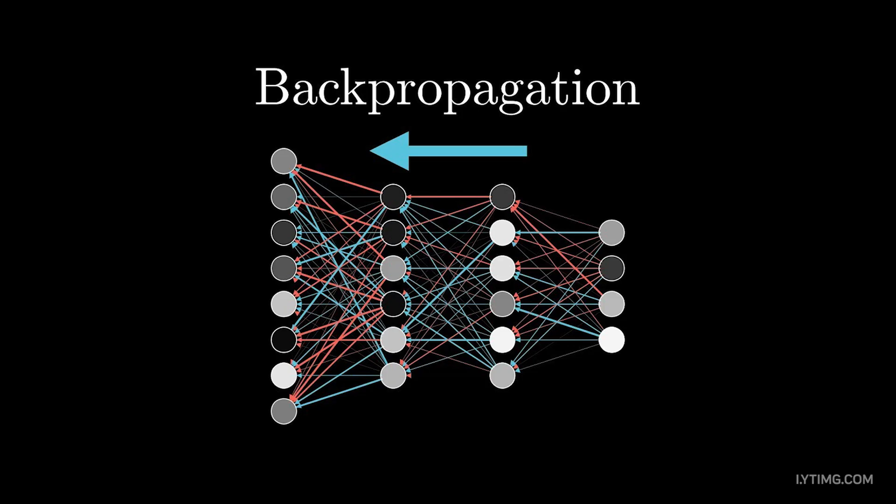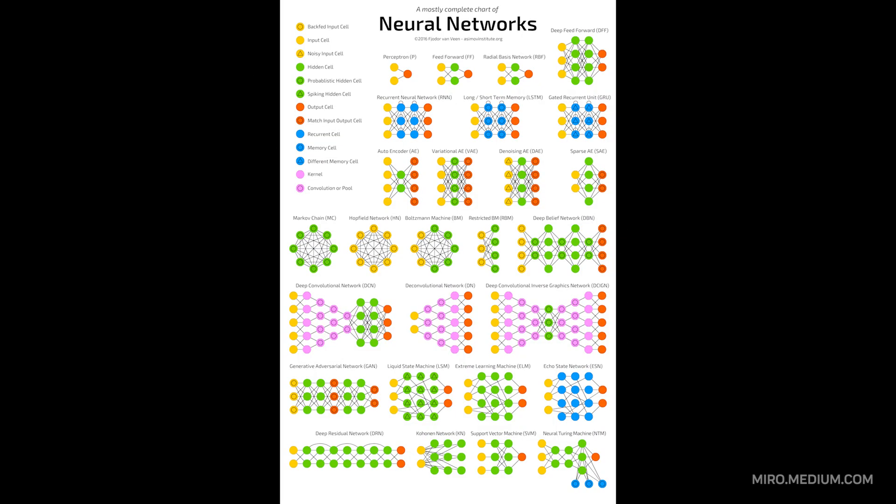Training adjusts these weights using a process called backpropagation. The real power comes from specialized architectures.